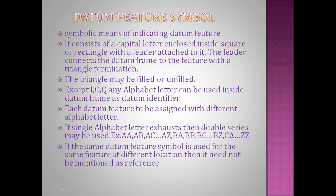If it gets exhausted, then a double series can be used like AA, AB, AC. It can be used at multiple locations - it should refer to a single datum feature, you should not refer to different datum features.